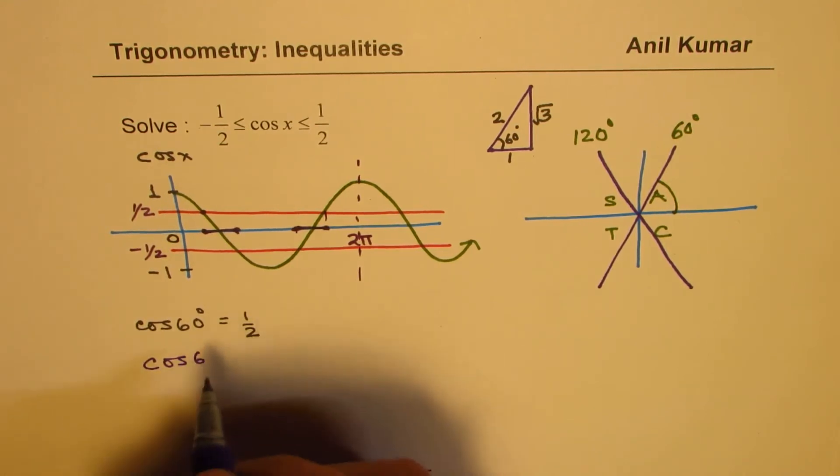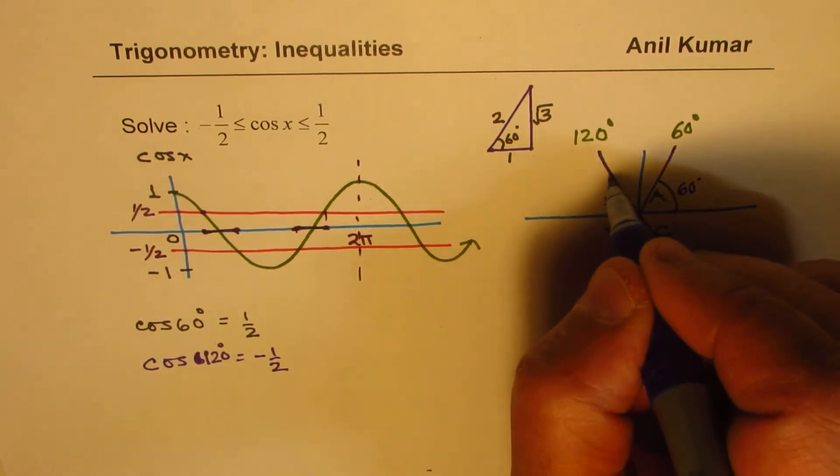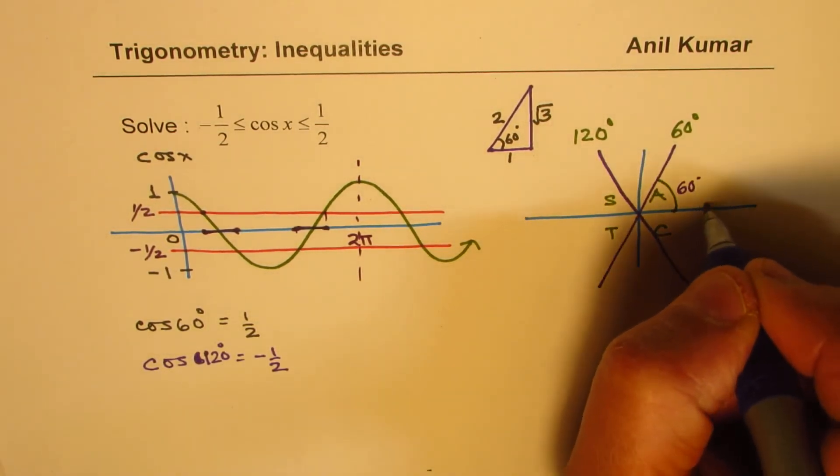It is between plus and minus half for a value which is from, I mean, sorry, I want to write 120 here. 120 degrees is actually minus half. So this angle is 60 degrees and this angle here is 120 degrees.